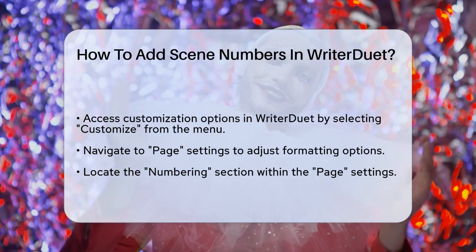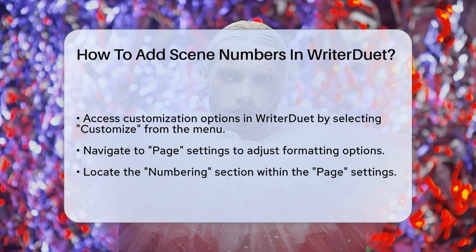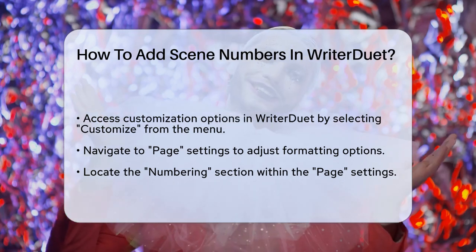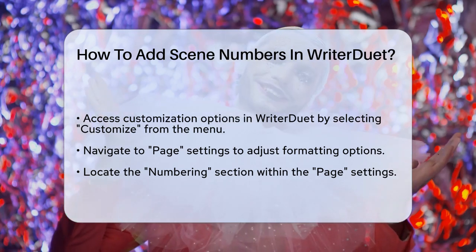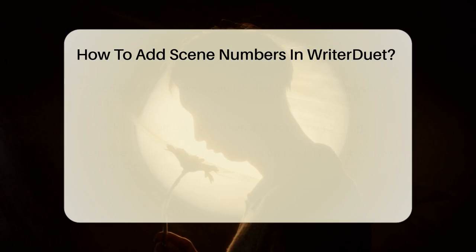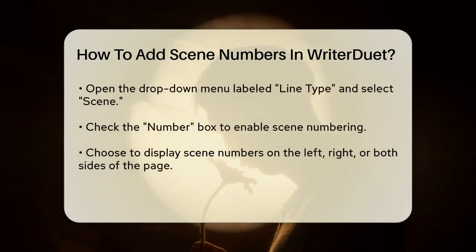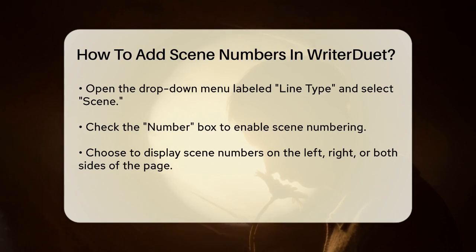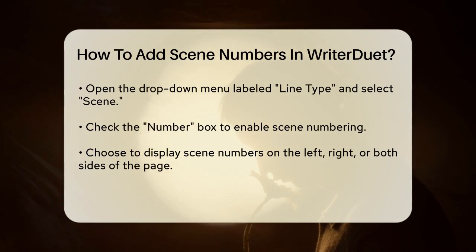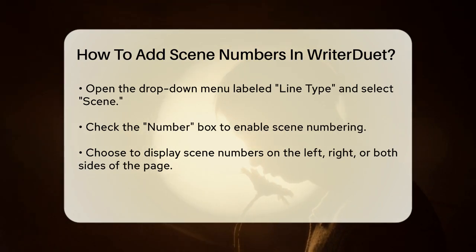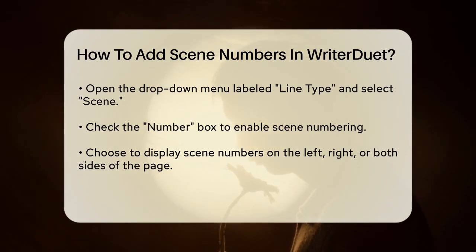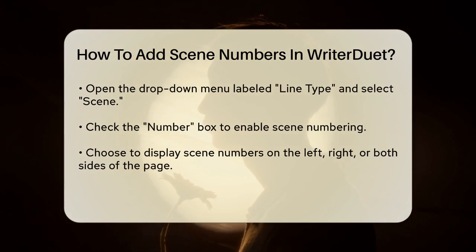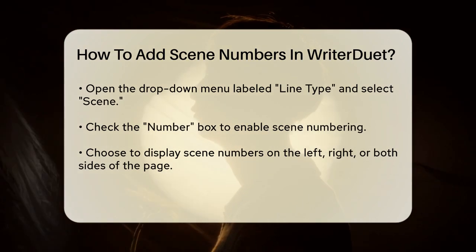Once you're in the Page Settings, look for the Numbering section. Here you'll find a drop-down menu labeled Line Type. Open this menu and select Scene from the list. This tells Writer Duet that you want to number your scenes.